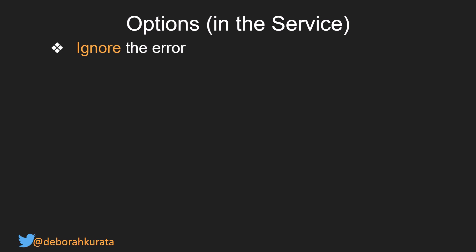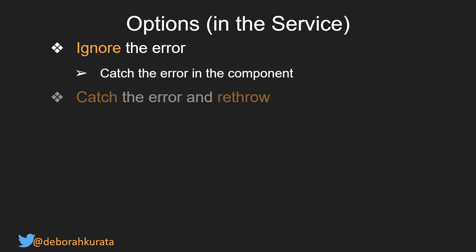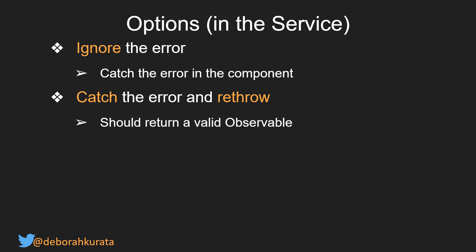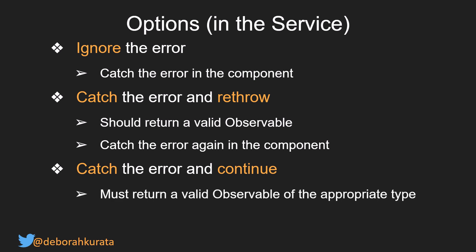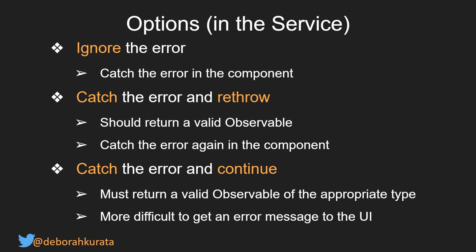In the service, we can ignore the error and simply catch the error in the component. We can catch the error and re-throw, which should return a valid observable, then catch the error again in the component. Or we can catch the error and continue — it must return a valid observable of the appropriate type. In this last case, it's a bit more difficult to get an error message to the UI. Let's take a deeper look at these last two.